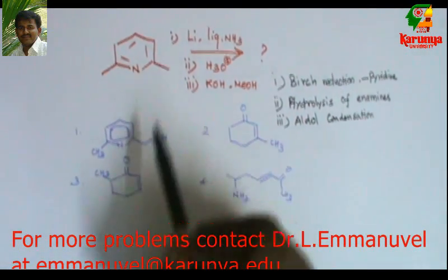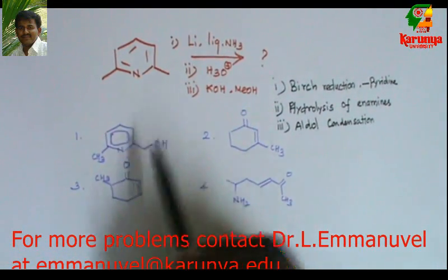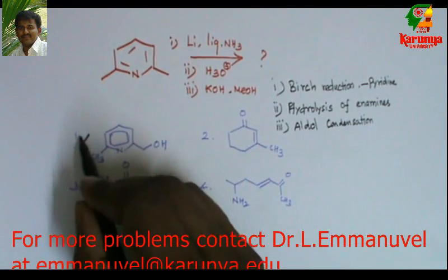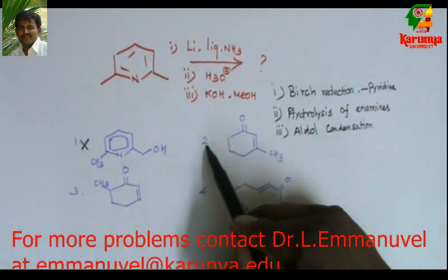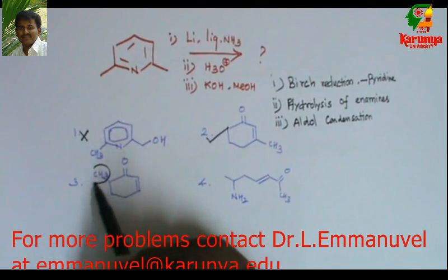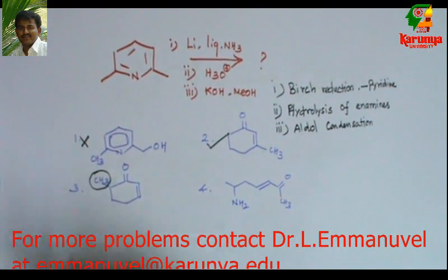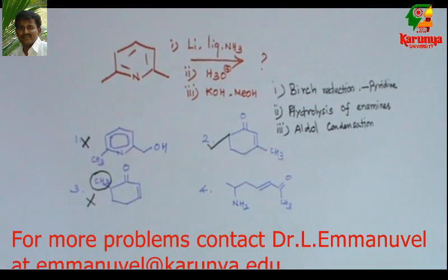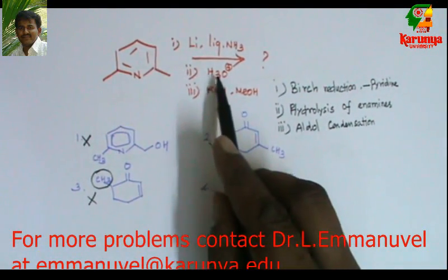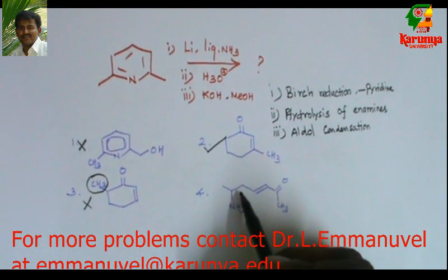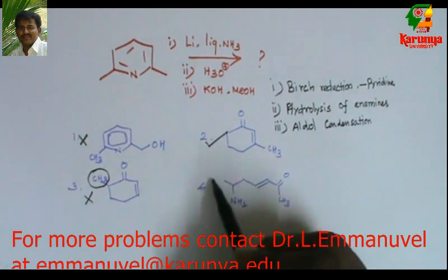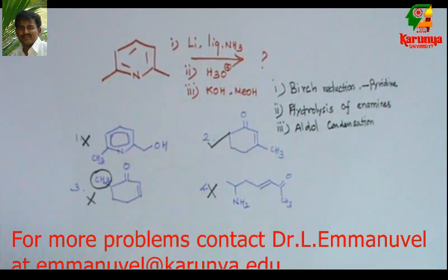Looking at the given options: the first option shows a methyl group that has been oxidized, which is not possible since none of the three conditions are oxidation conditions. The second option matches exactly what we got from the mechanism. The third option is similar but the methyl group is not in the correct position, so it is not possible. The fourth option is what we would get after the second step — after hydrolysis — not after the third step, so it is also not possible.